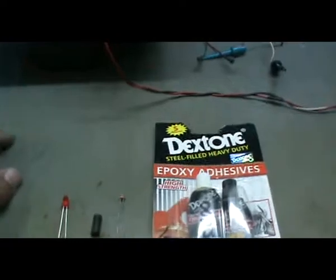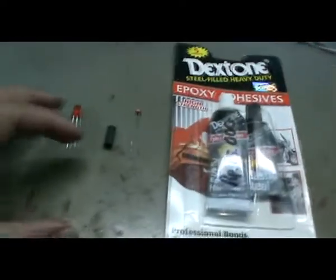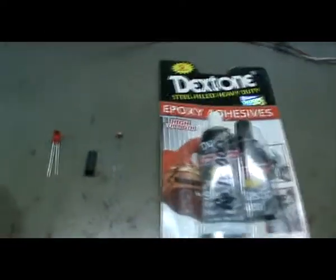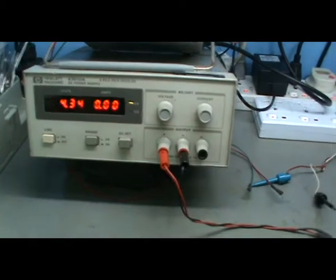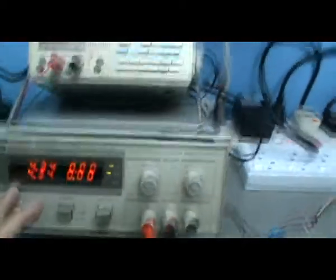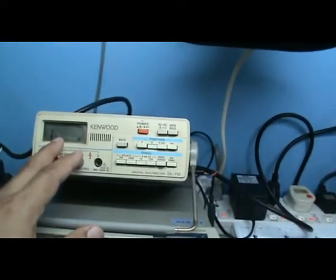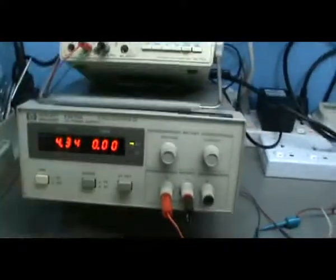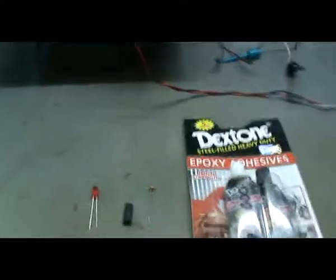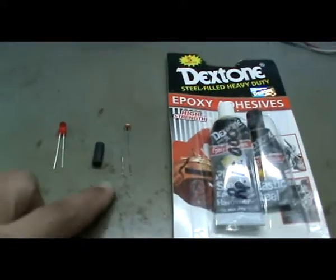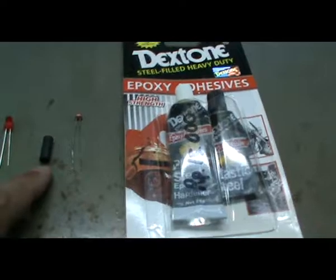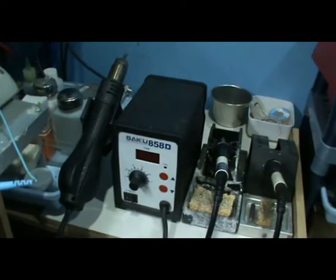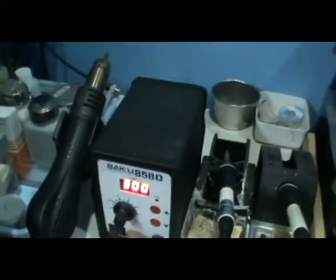Also you need some equipment for measurement after you complete to build this NSL32 replacement. You need one DC power supply and then one multimeter or ohmmeter. And of course for heat up this heat shrink tubing, we need one hot air.